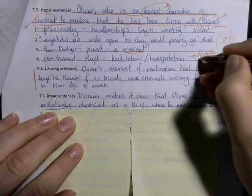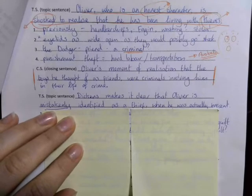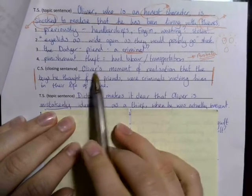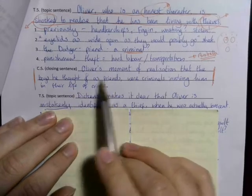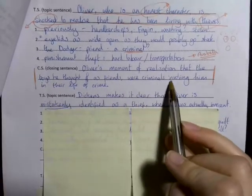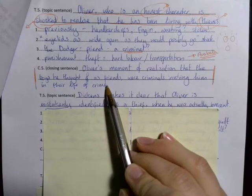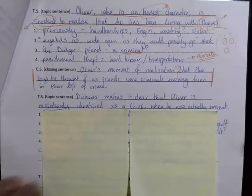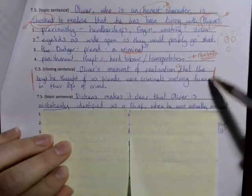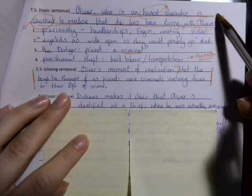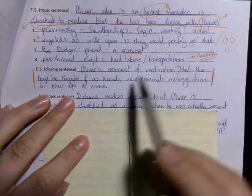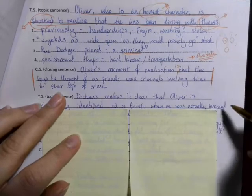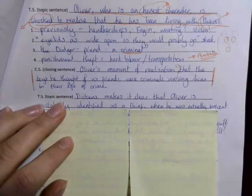So closing sentence: Oliver's moment of realization that the boys he thought of as friends were criminals involving him in their life of crime. Okay, so topic sentence, closing sentence nice and closely linked. So the beginning one is he is honest and he's been living with thieves, and at the end is that he thought they were his friends but they're involving him in the life of crime. So these are saying quite similar things but rephrasing them and just drawing out a slightly different emphasis.